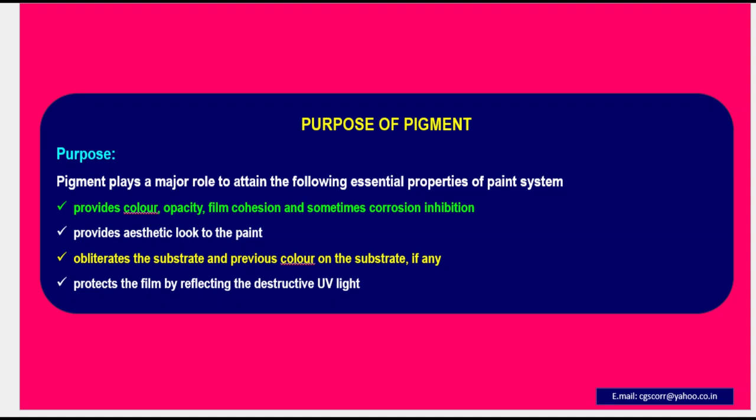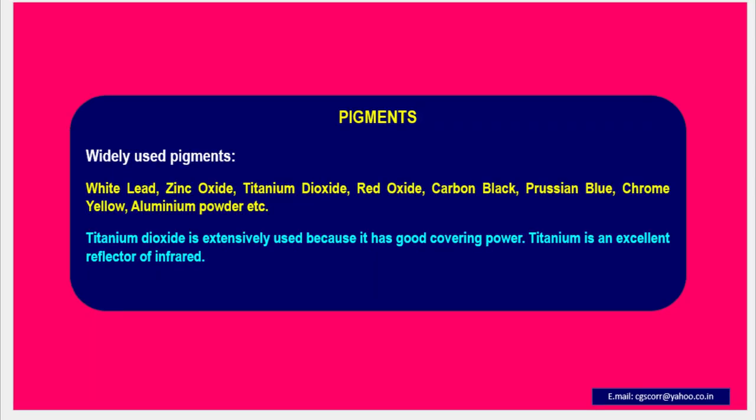Purpose of pigment: Pigment plays a major role in attaining essential properties of a paint system. It provides color, opacity, film cohesion, and sometimes corrosion inhibition. It provides an aesthetic look to the paint, obliterates the substrate and previous color if any, and protects the film by reflecting destructive UV light. Widely used pigments include white lead, zinc oxide, titanium dioxide, red oxide, carbon black, Prussian blue, chrome yellow, and aluminum powder. Titanium dioxide is extensively used because it has good covering power and is an excellent reflector of infrared.